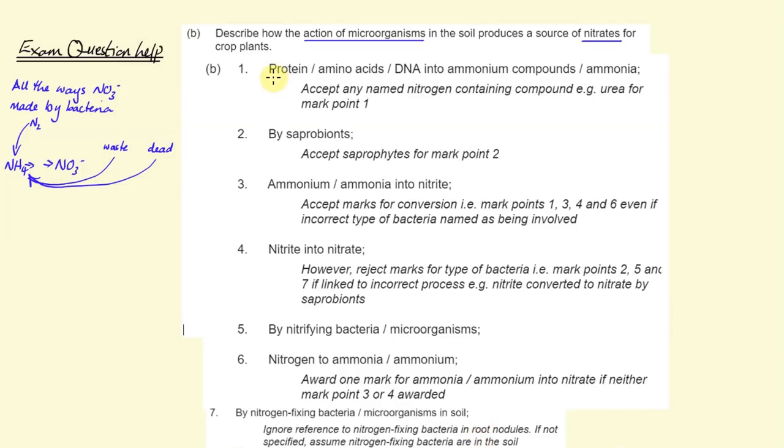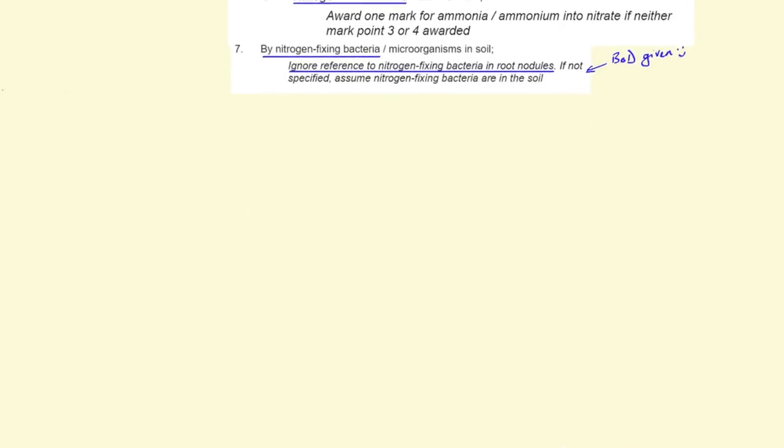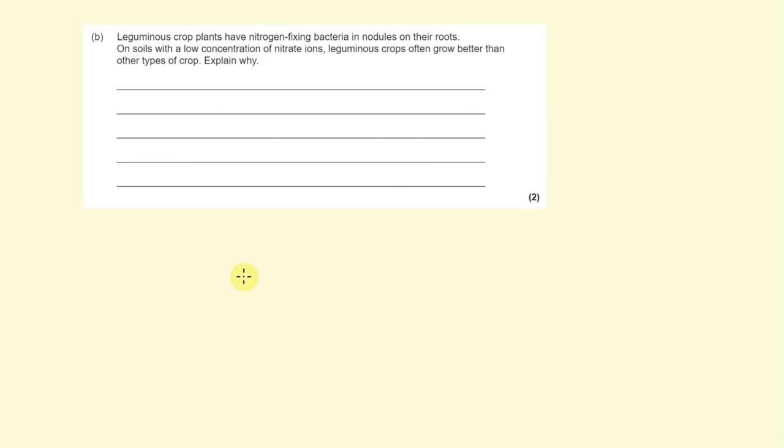So proteins are made into ammonium compounds by saprobionts. That ammonium is turned into nitrites, and nitrates by nitrifying bacteria, and nitrogen in the atmosphere is turned into ammonium ions as a result of nitrogen fixing bacteria in the soil. Notice that they give you the benefit of the doubt, if you don't talk about root nodules you don't get that mark taken away from you.